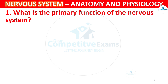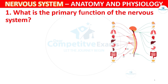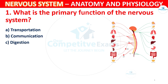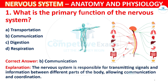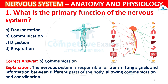Question 1: What is the primary function of the nervous system? Options: A) Transportation, B) Communication, C) Digestion, D) Respiration. The correct answer is B, Communication. The nervous system is responsible for transmitting signals and information between different parts of the body, allowing communication and coordination.